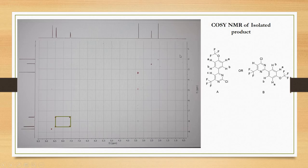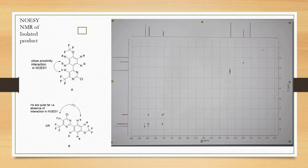Now let's move to the NOESY NMR. If you see, these protons are close to each other. So if your compound is A, then you must see the interaction between hydrogen C and hydrogen B. If your compound is B, then you will not see any interaction between this phenyl ring and this heterocyclic ring.